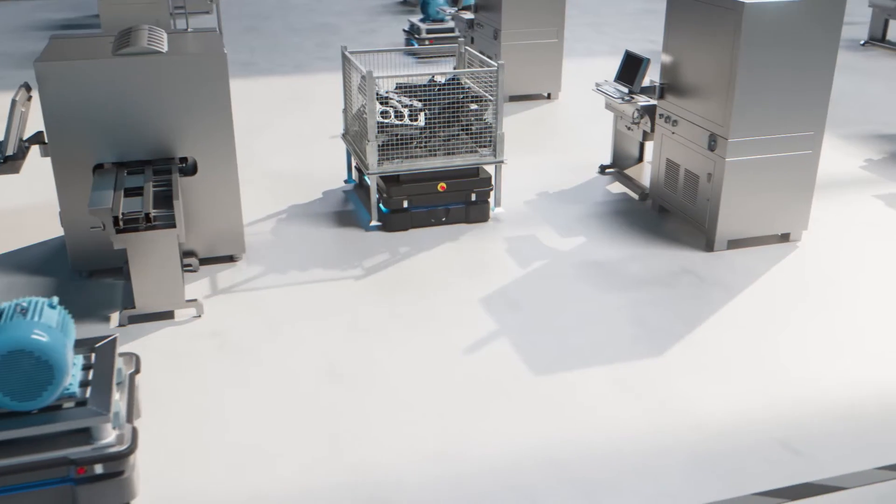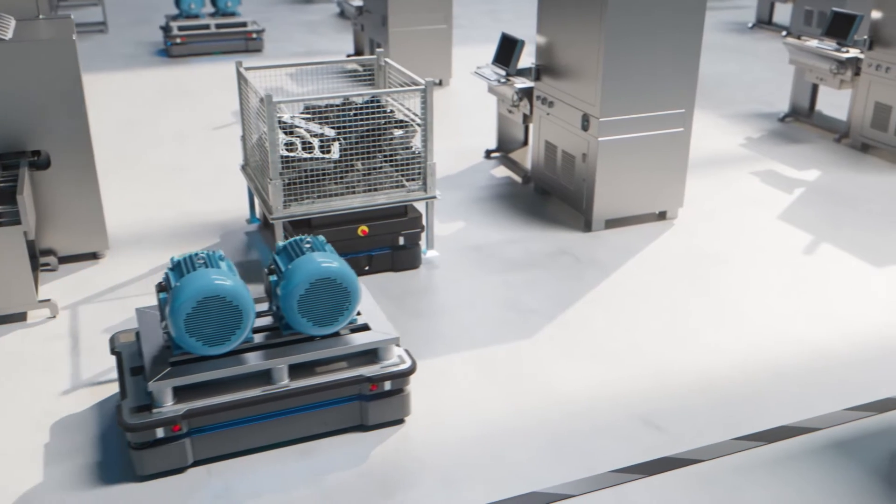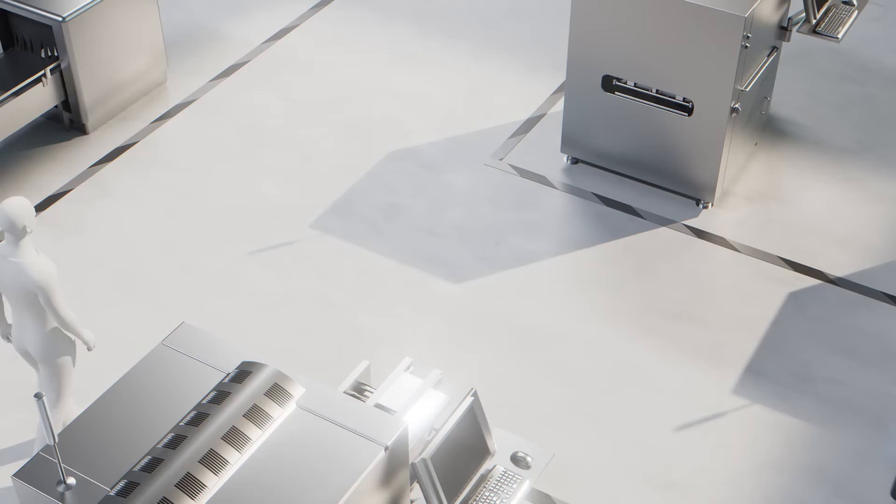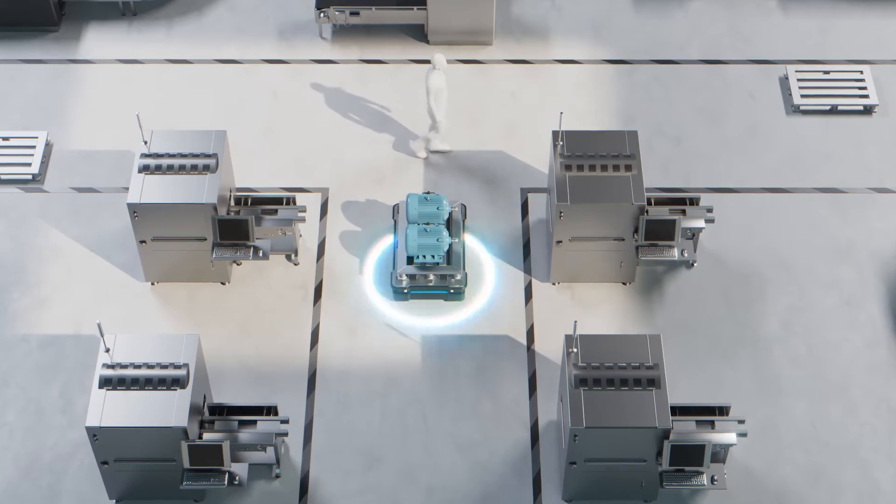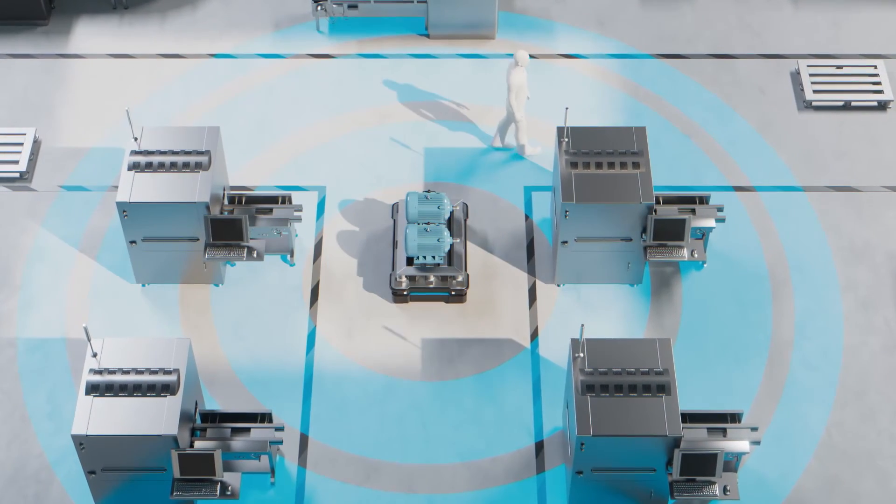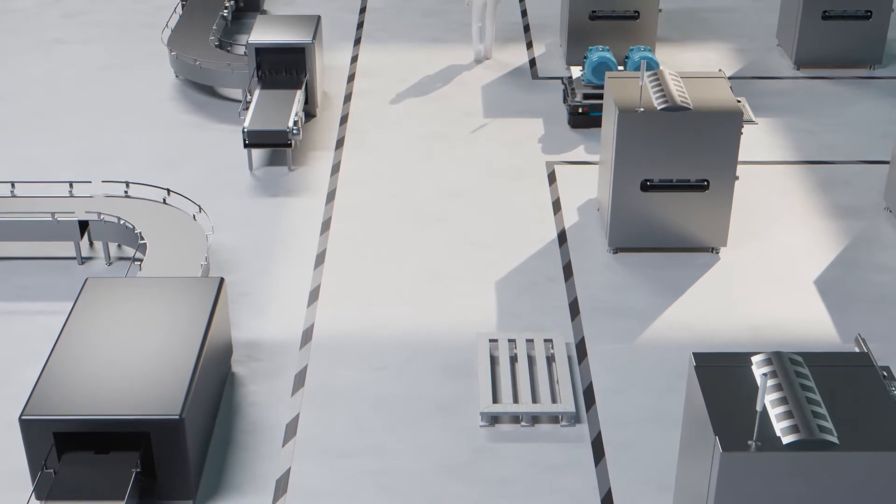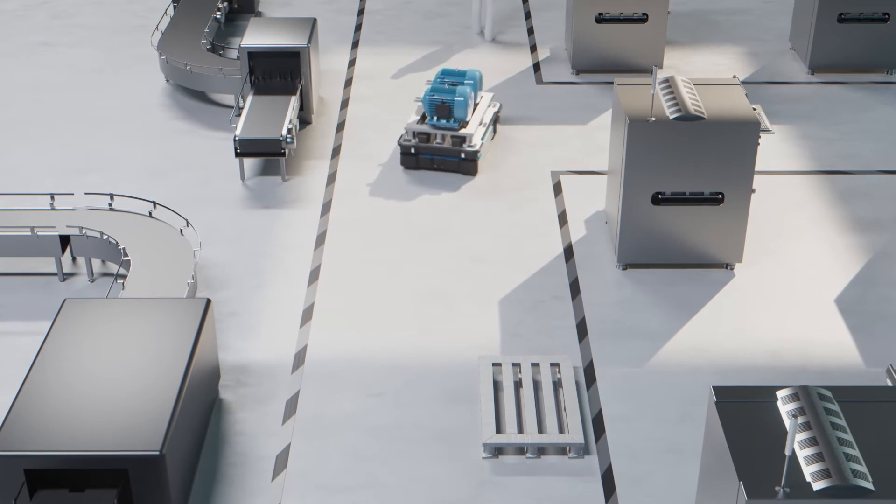As with all the MiR robots, the MiR 600 and MiR 1350 are collaborative. With multiple built-in safety features, including dynamic safe zone monitoring, the MiR 600 and MiR 1350 always maintain a safe distance to employees and obstacles.